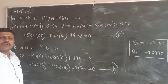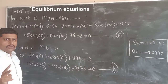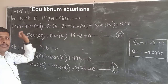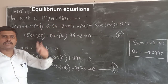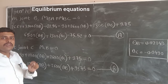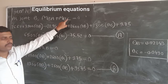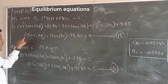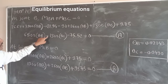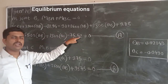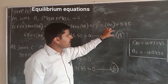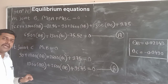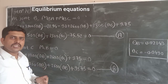Moving to step 4, that is equilibrium equations. There are two unknowns, so there will be two equilibrium equations. At joint B, the equilibrium equation is M_BA + M_BC = 0 — that is, the sum of moments starting from B equals zero. Putting in the values from equations 2 and 3, we get: 6500*theta_B + 1300*theta_C − 75.52 = 0, which we denote as equation A.